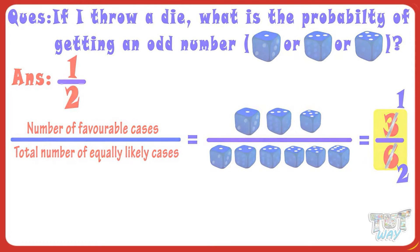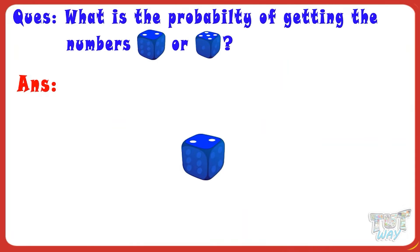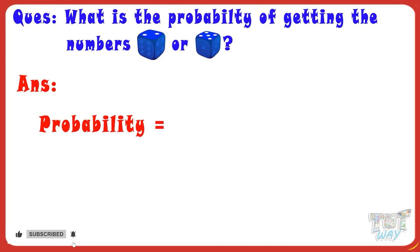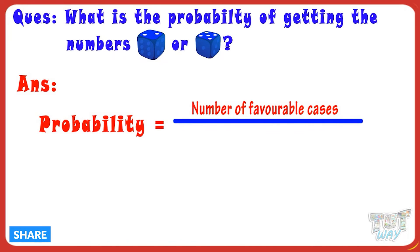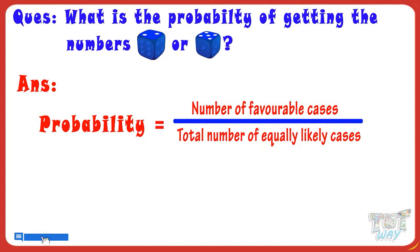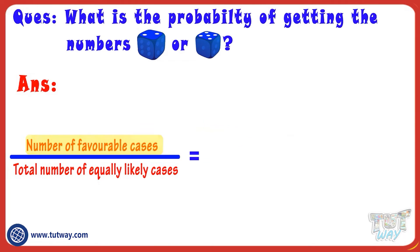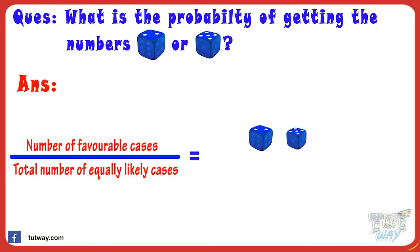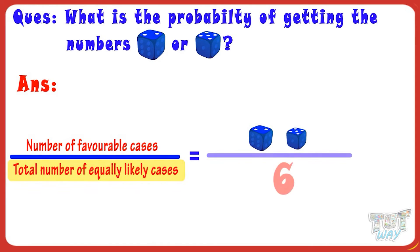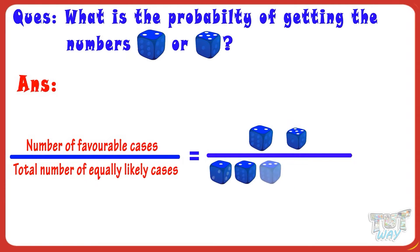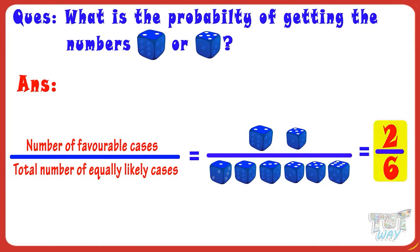Now, let's take another example. What is the probability of getting the numbers two or five on the dice? We know the probability is number of favorable cases divided by total number of equally likely cases. Number of favorable cases here are two — that is, getting numbers two or five. Total number of cases are six, as there are six numbers on the dice numbered from one to six. So, the probability of getting numbers two or five is two by six, or one by three.